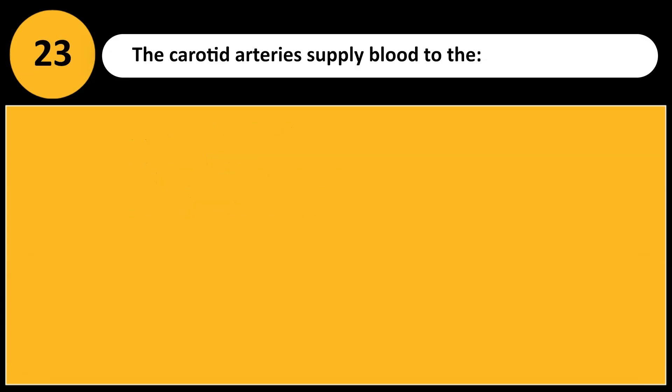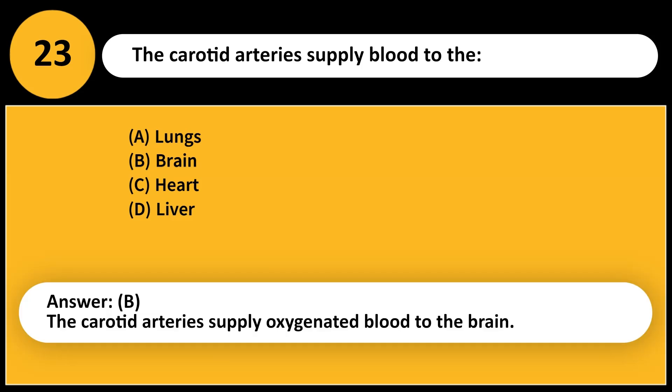The carotid arteries supply blood to the: A. Lungs. B. Brain. C. Heart. D. Liver. Answer: B. The carotid arteries supply oxygenated blood to the brain.